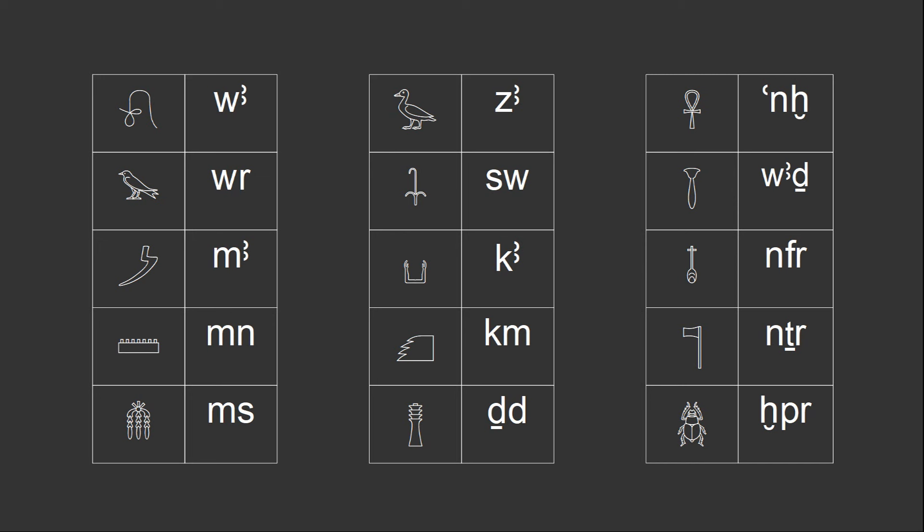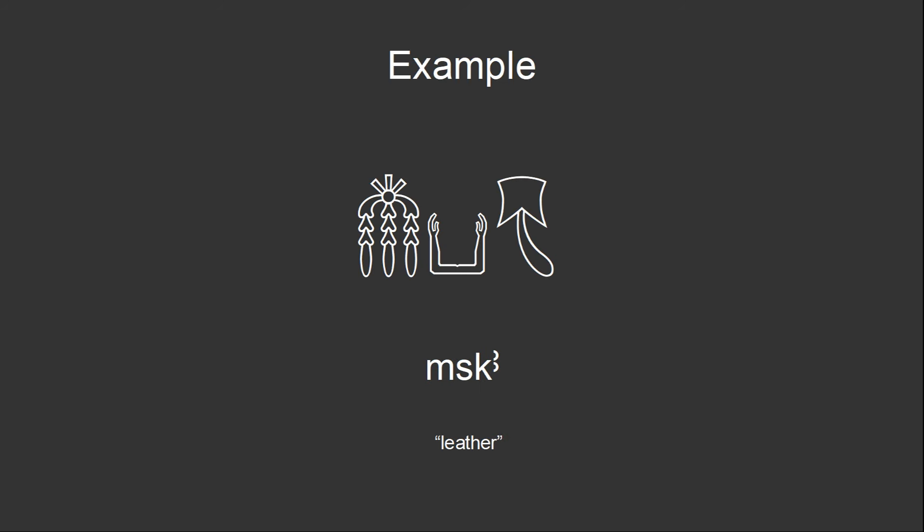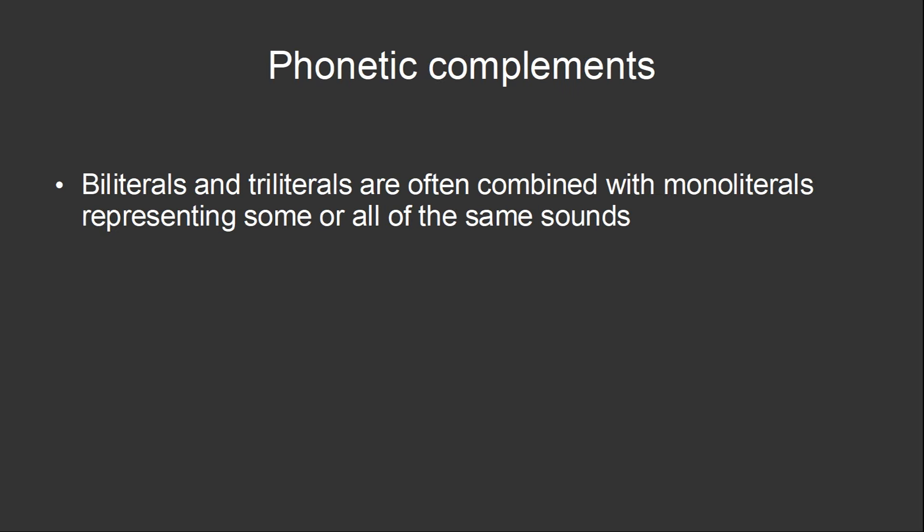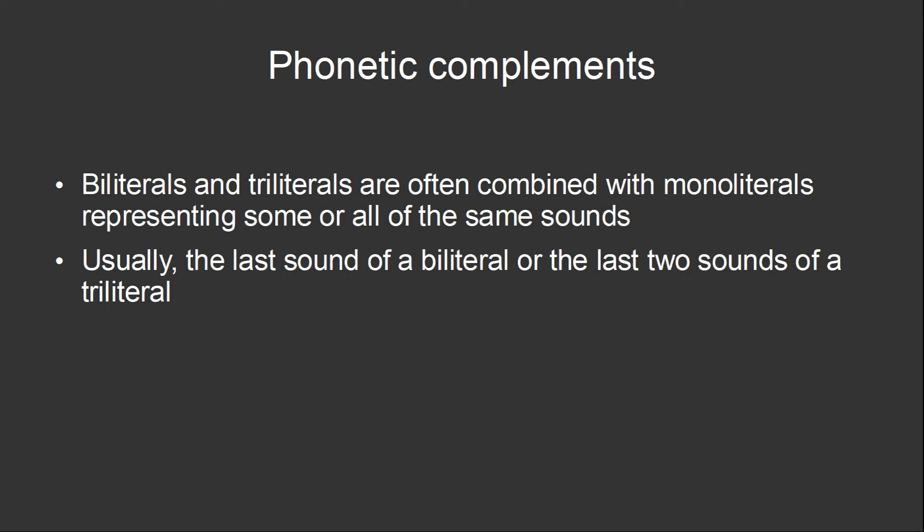An example of a word written with biliterals is the word mescar, which means leather. The last symbol here is a determiner, which I'll explain more later, but it's not actually pronounced. The phonetic part of the word is the first two symbols, which are both biliterals. The first one is mes, and the second one is car. While biliterals and triliterals can stand on their own, as in this example, more often than not they're combined with monoliterals, representing some or all of the same sounds. These are called phonetic complements. Most often, the phonetic complement will repeat the last sound of a biliteral, or the last two sounds of a triliteral.